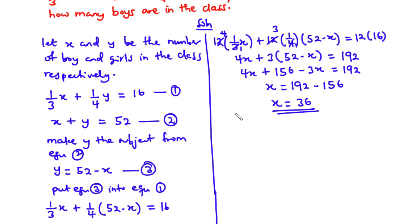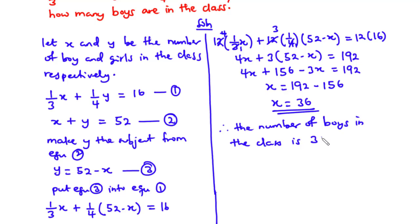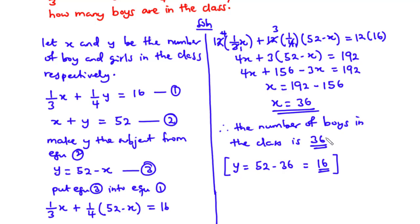Since x is the number of boys in the class, the number of boys in the class is 36. You can also find the number of girls: y equals 52 minus 36, which equals 16. You may or may not receive marks for finding y, but finding x — the number of boys — earns the full mark. That's it for today's video. Thanks for watching and see you in my next video, bye bye.